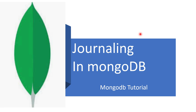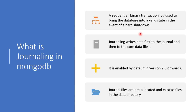Welcome to this MongoDB tutorial. In this tutorial we will learn what is journaling in MongoDB. In simple English, a journal means a file which contains all the information of a transaction. The same stands true for MongoDB journaling — it is a file which contains the binary transaction log, which can be used to bring the database up and running in case there is a catastrophic failure.